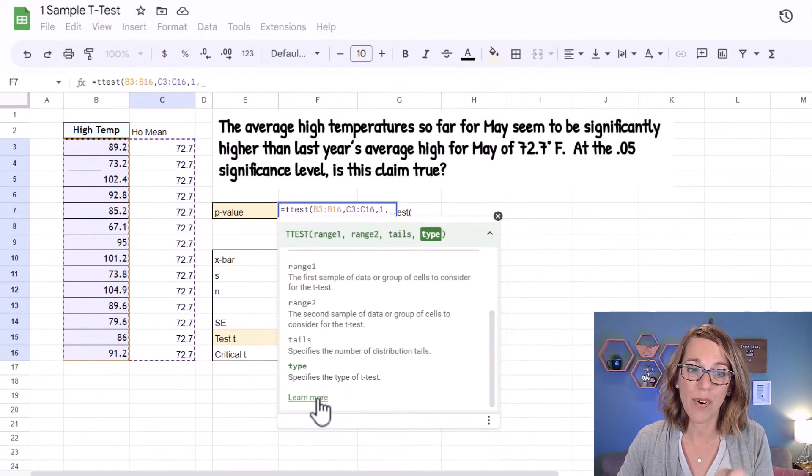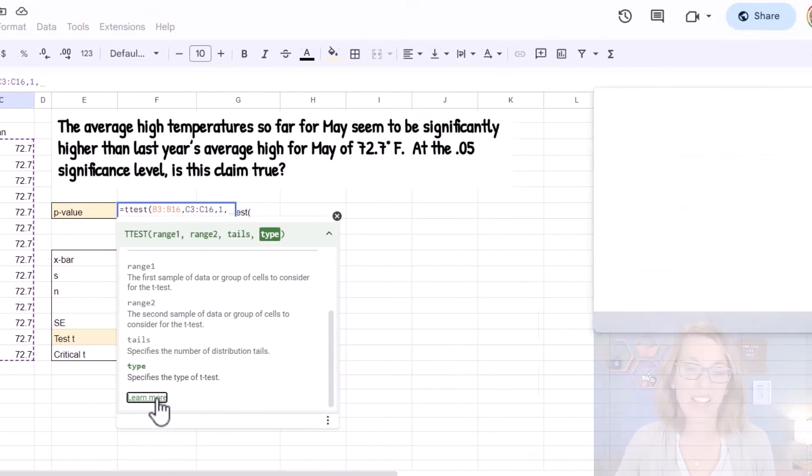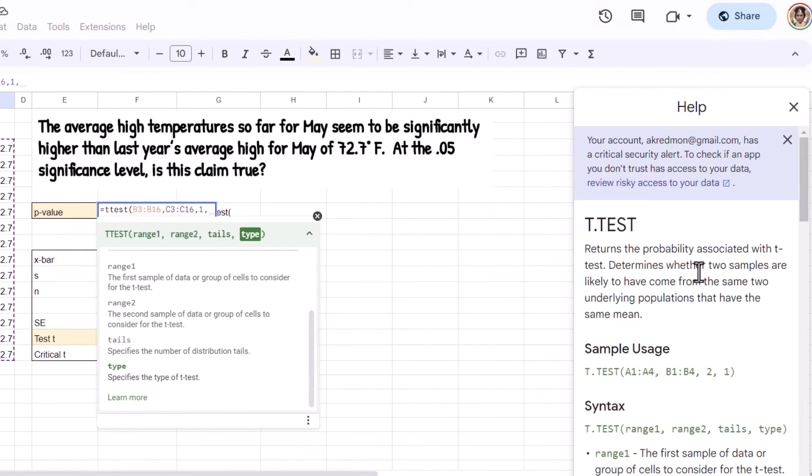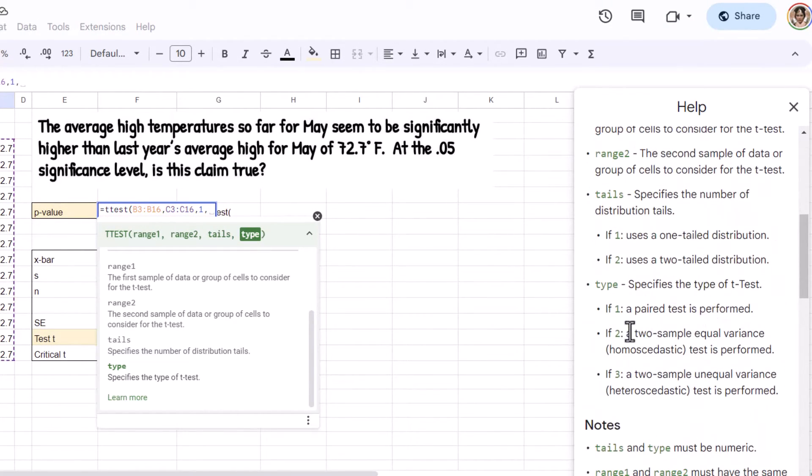Now I never remember how it's labeling my types, so I'm going to click on learn more. Now again, if you don't have these prompts, click on that question mark. I'm going to click on learn more, and I am going to scroll down until I get the different types.